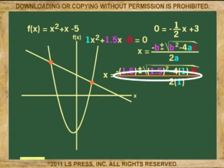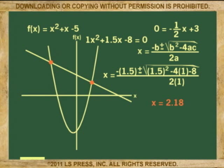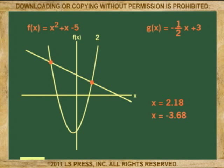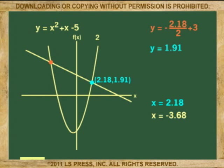We now go back to the original equations and substitute x values to find the corresponding values for y. We'll use the linear equation because it is easier: y = -x/2 + 3. When x is 2.18, -2.18/2 is -1.09. We add 3 and y is 1.91. The first set of coordinates is (2.18, 1.91).